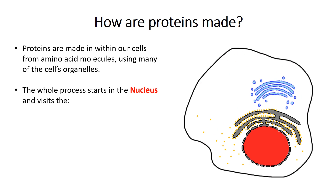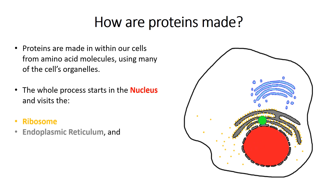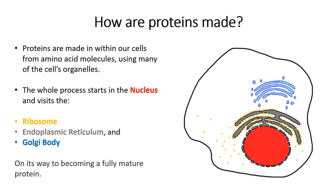From here, the process travels outside of the nucleus to the ribosome, in orange, before being transferred to the endoplasmic reticulum, in grey, and finally to the Golgi apparatus, or Golgi body, in blue, before being released as a fully mature protein, ready to get to work. If you are unfamiliar with cells and the organelles within them, you can use the video linked here to find out more.